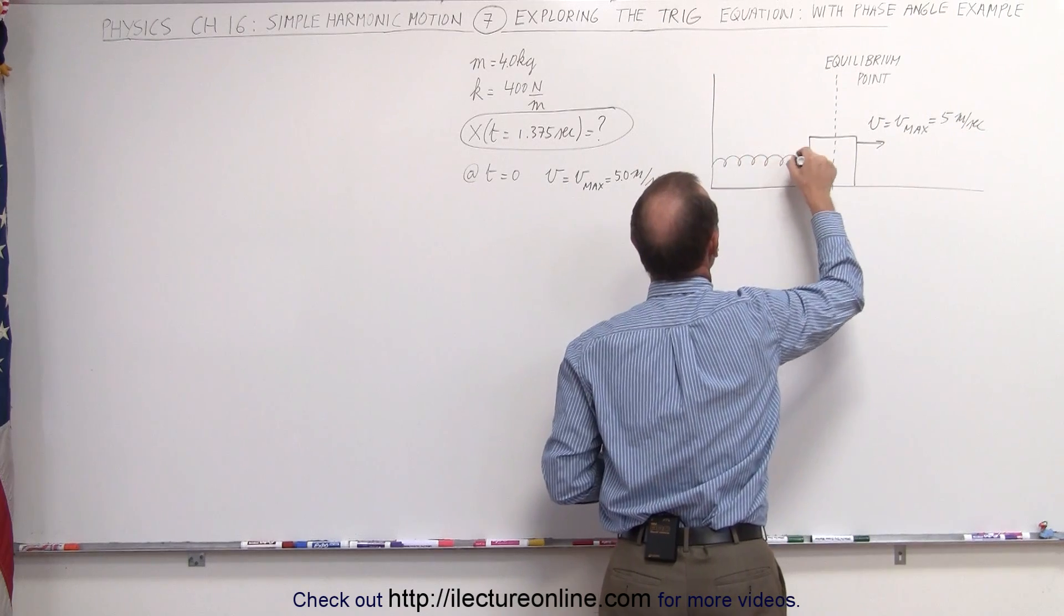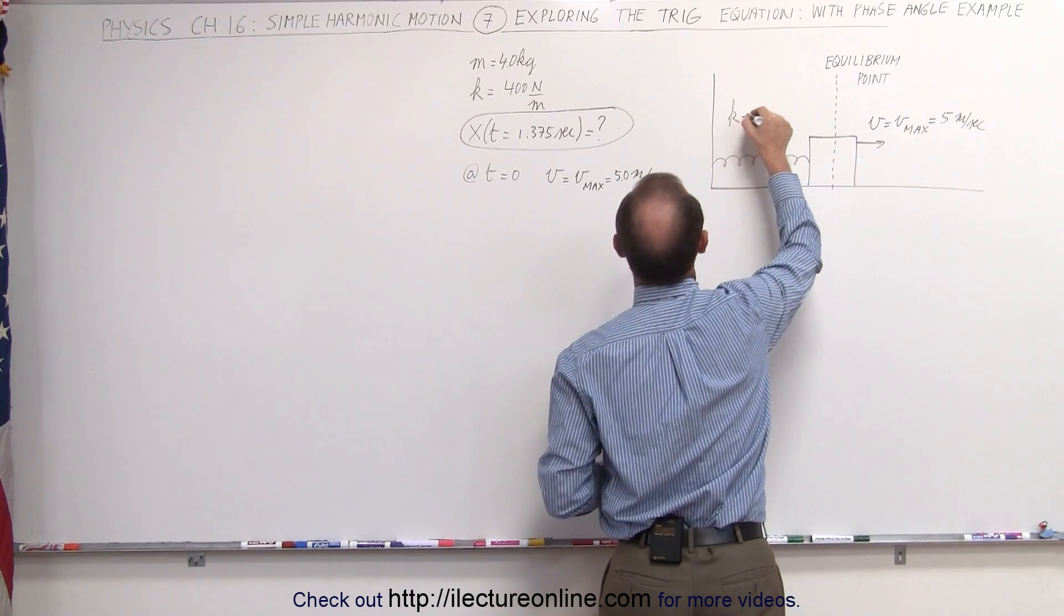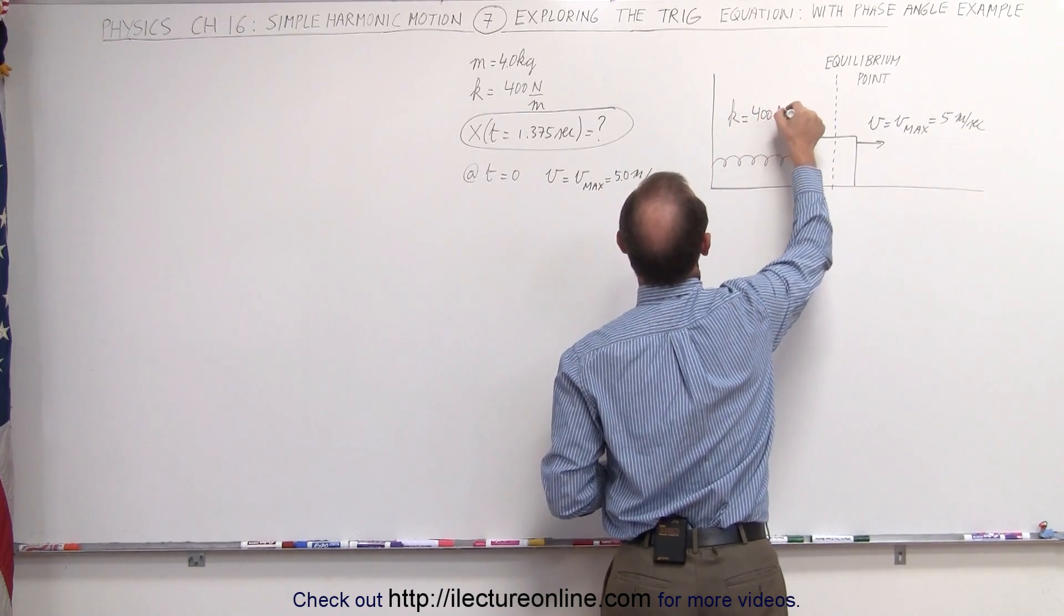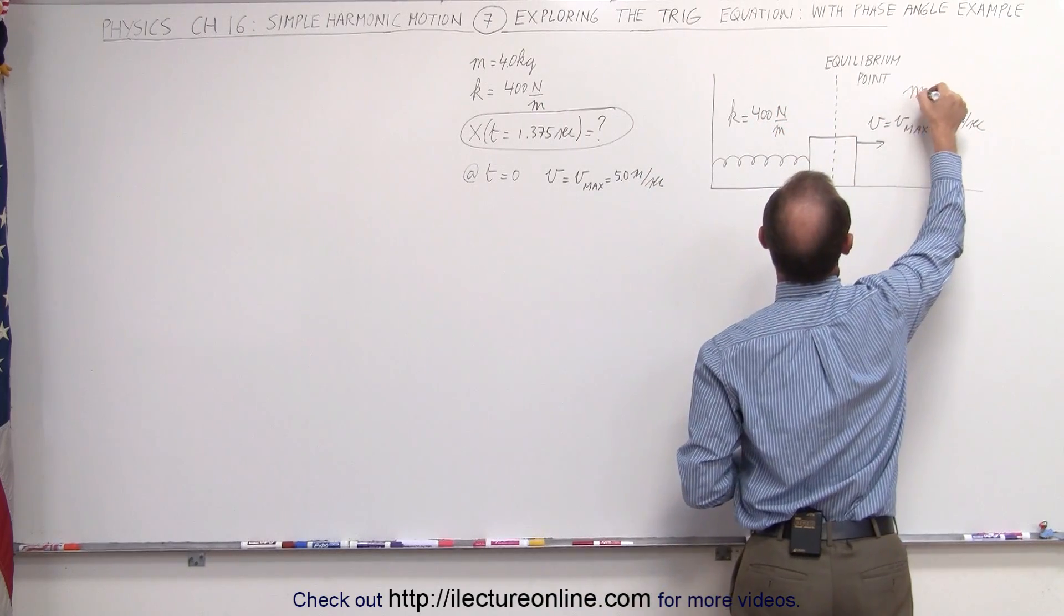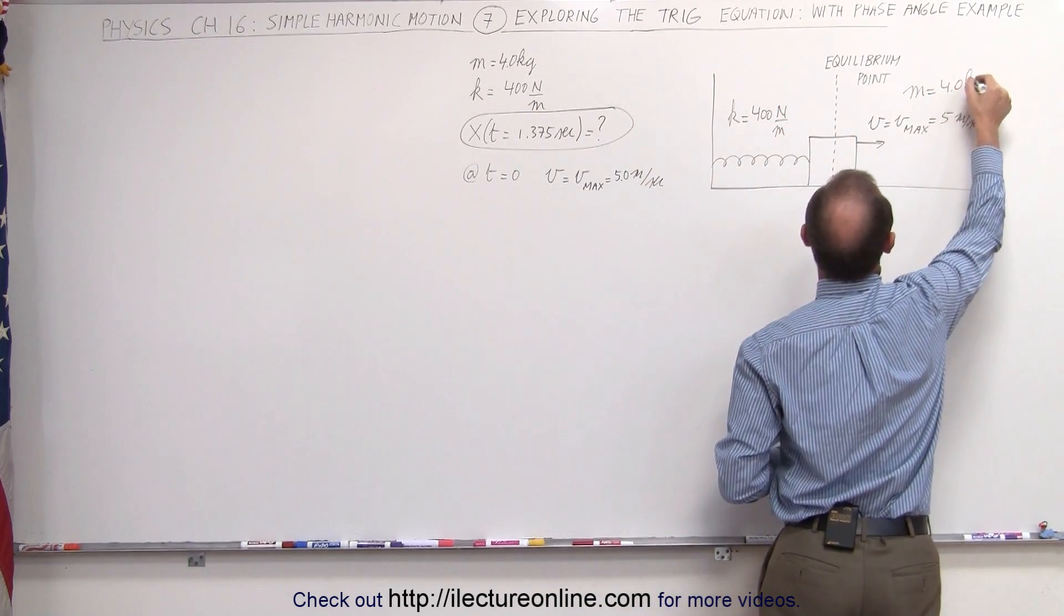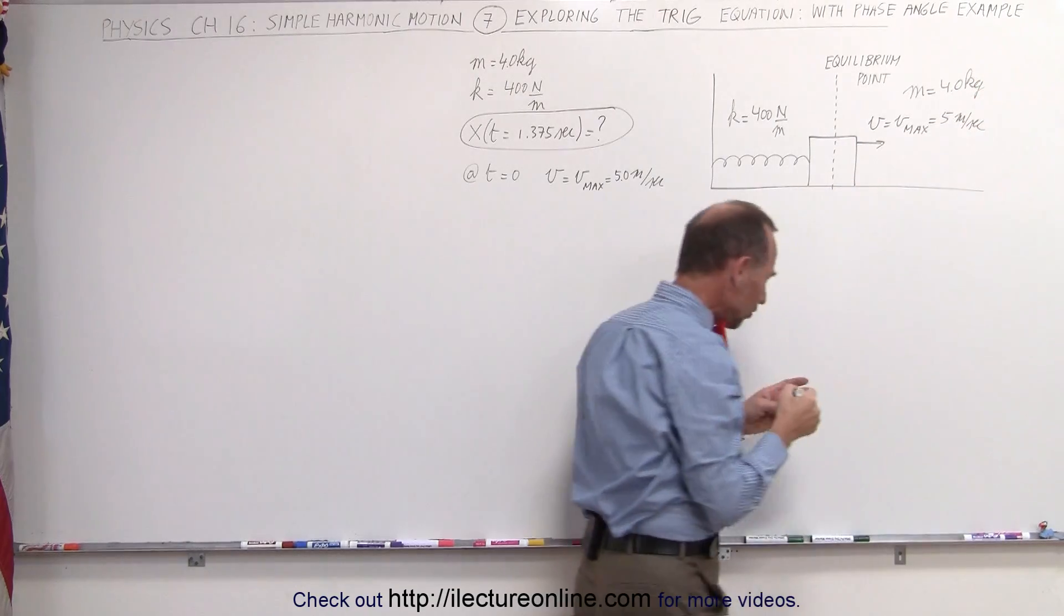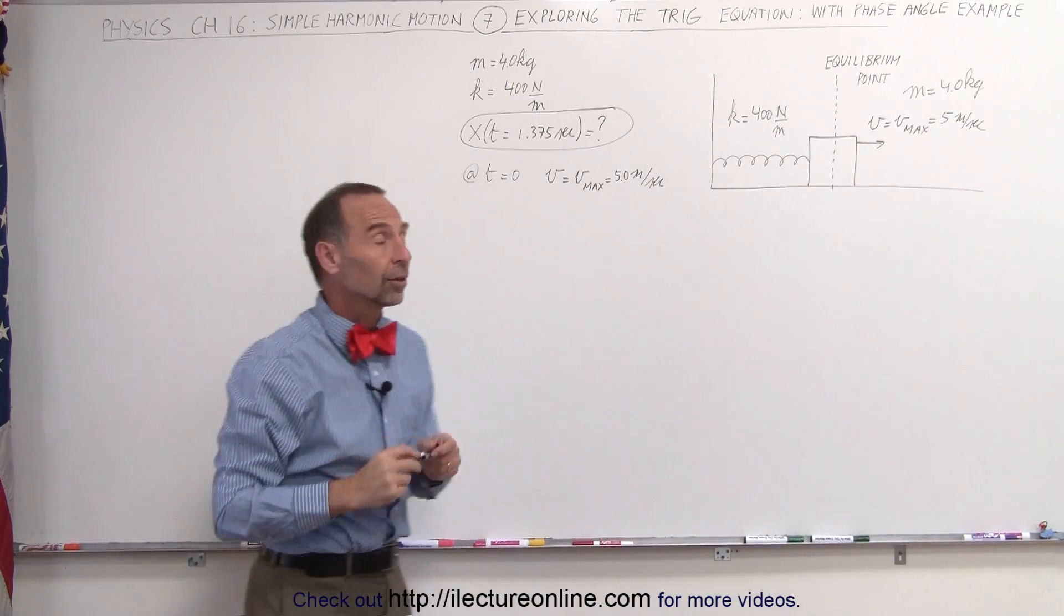Here's the spring, the spring constant k is equal to 400 newtons per meter, and the mass of the object m is equal to four kilograms. So what would the equation look like that defines that particular motion?